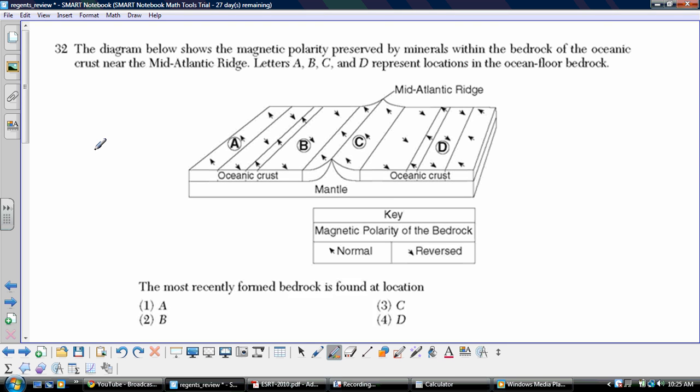The diagram below shows the magnetic polarity preserved by minerals within the bedrock of the oceanic crust near the Mid-Atlantic Ridge. Letters A, B, C, and D represent locations on the ocean floor bedrock. We've got the mantle below the ridge. The ridge itself is right here, and we've got a key for polarity down here. The most recently formed bedrock is found at location... Well, we know that the new stuff is going to come out right at the ridge, and it's going to get older as you move each side away from the ridge. So that's letter C, which is answer choice three.